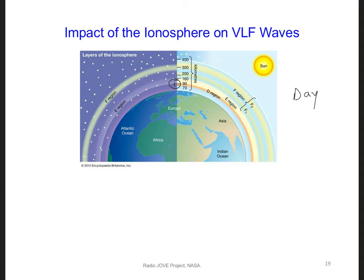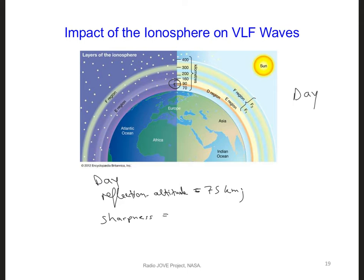Let's see what effect night might have on our propagating VLF signal at 10 kHz, relative to what we saw for daytime conditions. To change between day and night, all we need to do is change the reflection height and the sharpness of the electron density profile of the ionosphere. For day, the reflection altitude was 75 kilometers and the sharpness was 0.5 inverse kilometers. The best match for night uses a reflection height of 85 kilometers and a sharpness of 0.7 inverse kilometers.